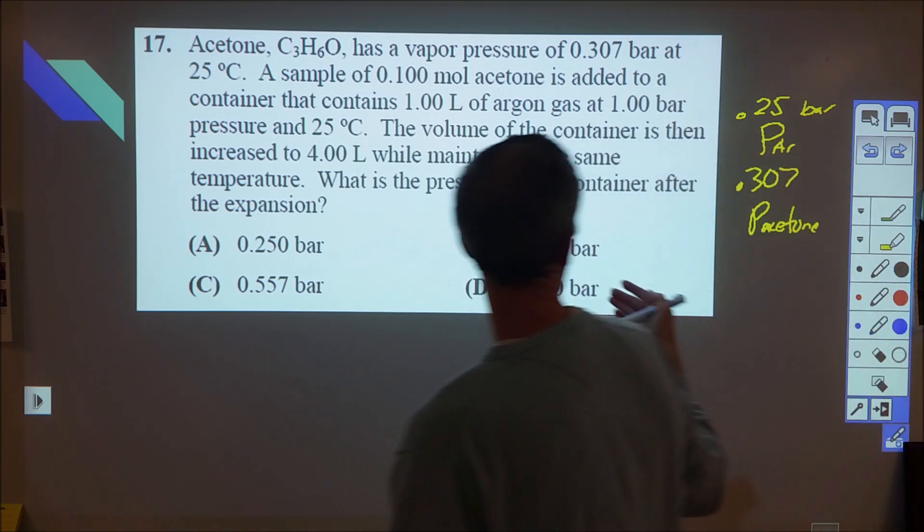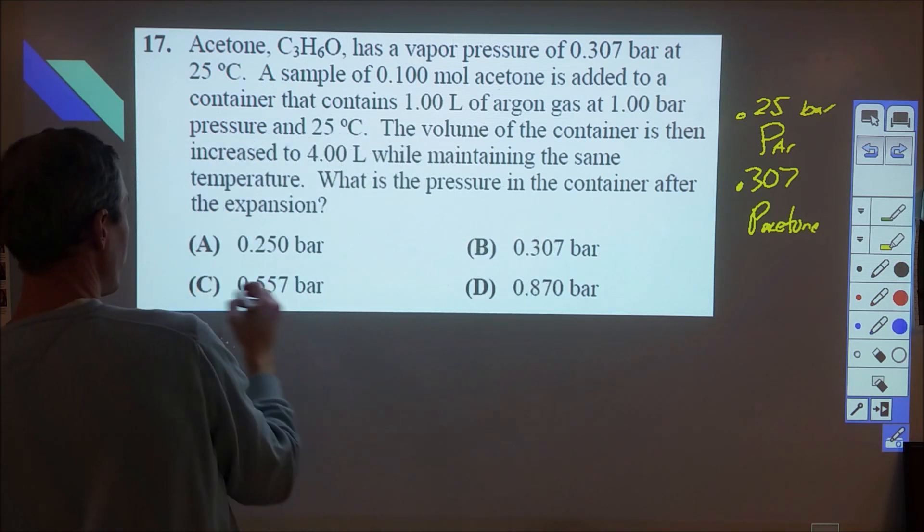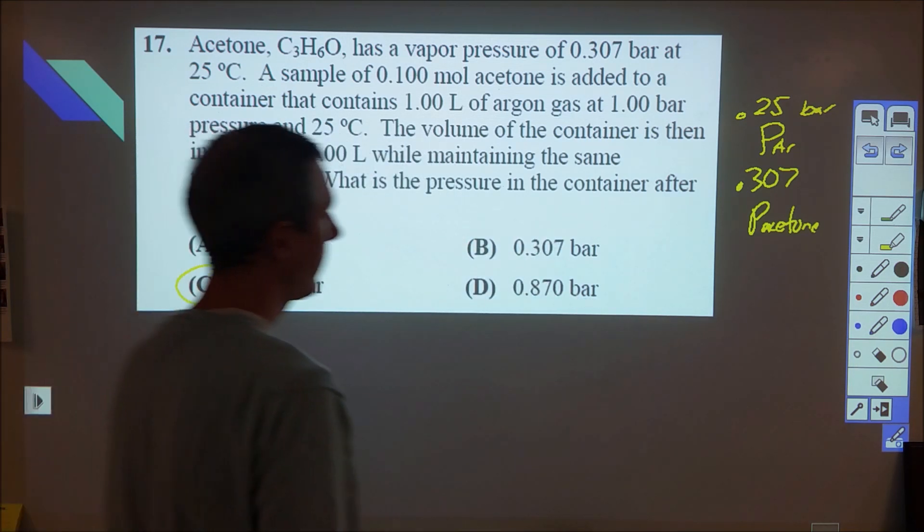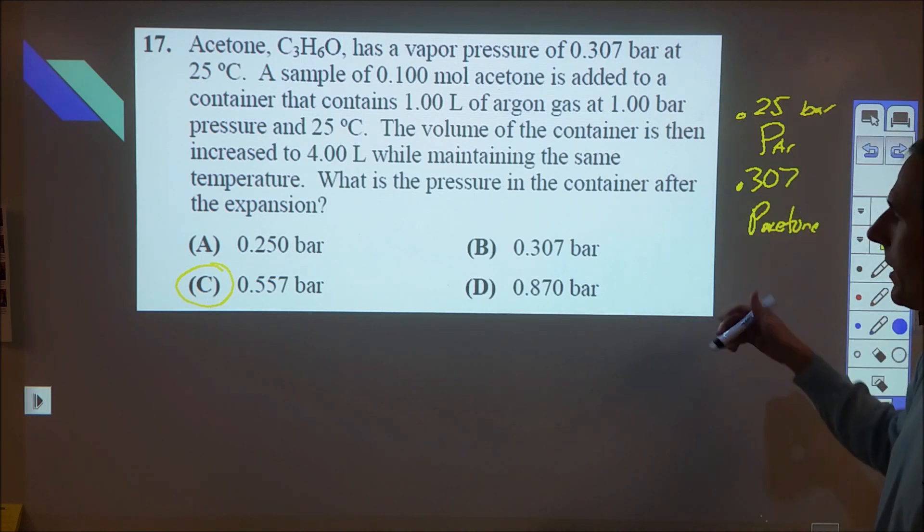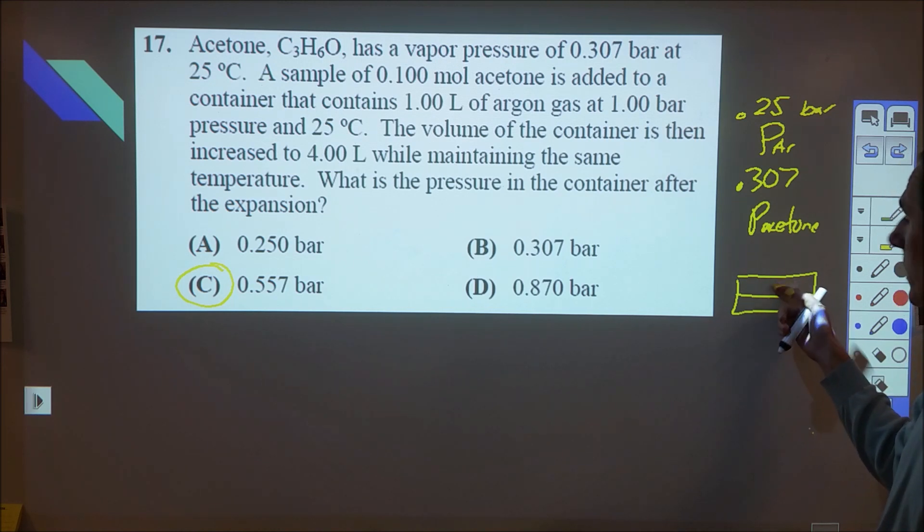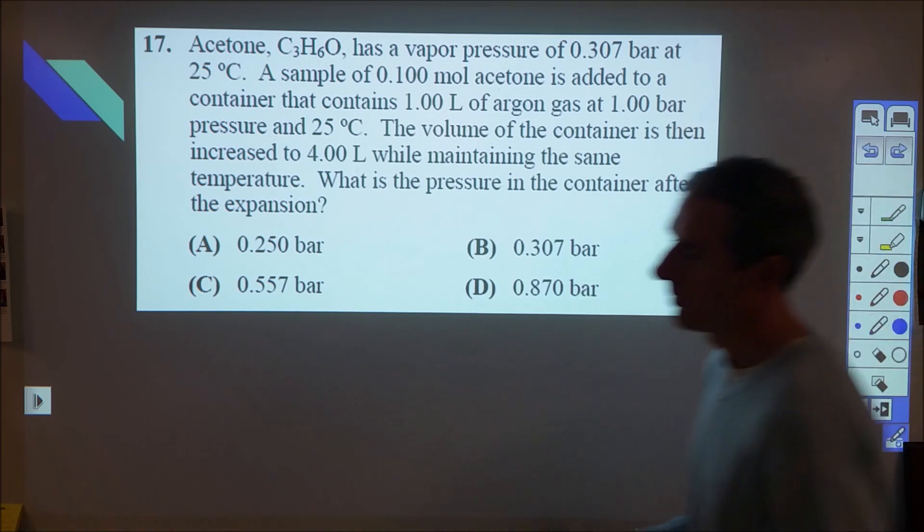Our total pressure in the container is a combination of those two, which would be C, 0.557 bar. Really the key there is as you expand your container, it doesn't matter how much bigger it gets – unless all of that liquid is gone, the equilibrium vapor pressure will remain 0.307 bar. It's only temperature dependent as long as you don't run out.